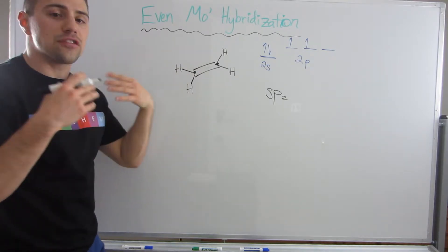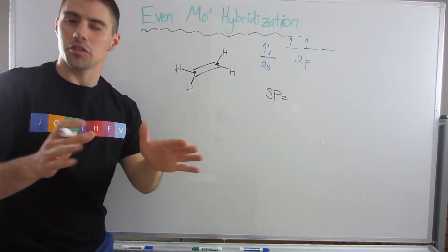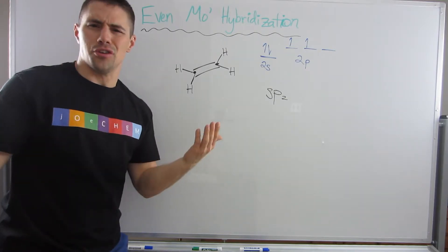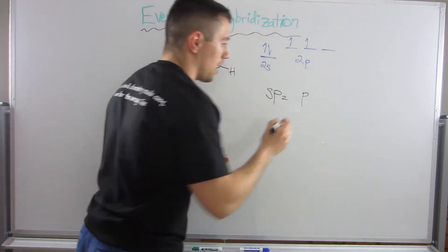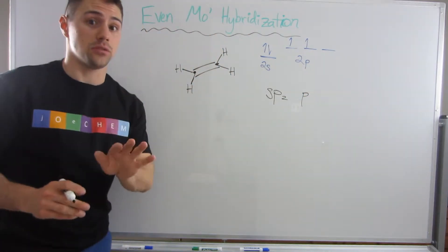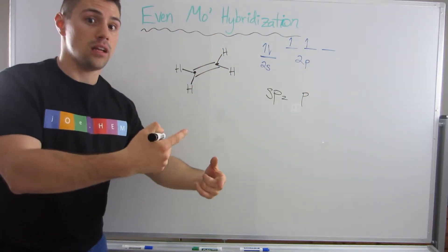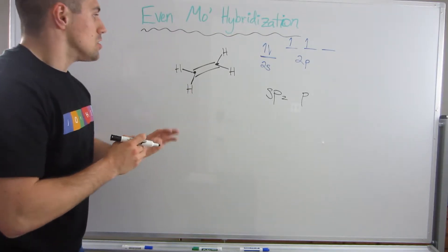What you might be wondering—and this is what I forgot to mention—is what happened to the other p orbital? Well, it actually wasn't hybridized, but don't worry, it's still used, and I'm going to thoroughly explain how this works.